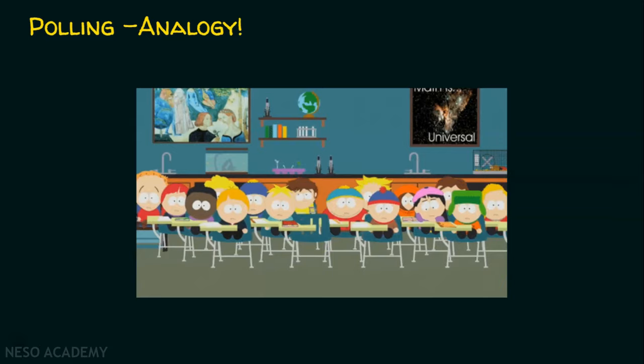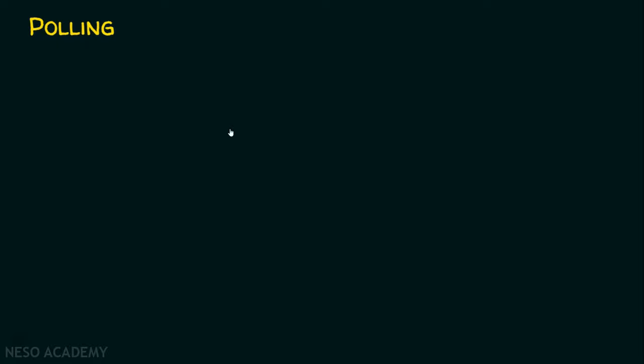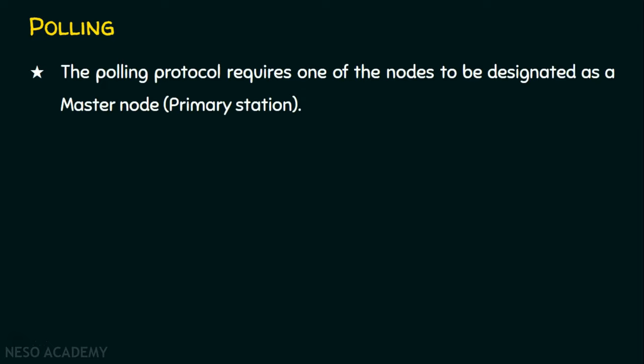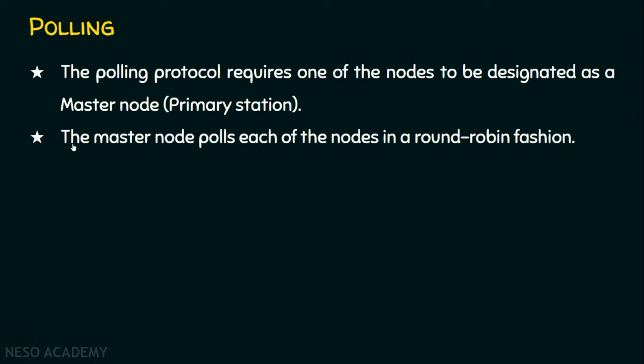The concept we are going to address is polling. We don't want collision to happen. In a shared medium, there are multiple stations that can access the shared medium at the same time, and obviously collision will be the result. To get rid of collisions, we have some protocols: random access protocols, controlled access protocols, and channelization protocols. Today, we are talking about this polling protocol. Someone should be elected or there should be a master, in order to coordinate everything for the smooth execution. Likewise, the polling protocol requires one of the nodes to be designated as a master node or a primary station. The master node polls each of the nodes in a round robin fashion.